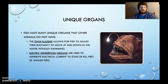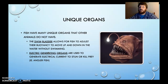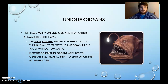Lastly, some unique organs. Fish have many unique organs that other animals do not have. Take a look at the angler fish — it has a unique organ that you can see. It's pretty scary, like something out of a nightmare. The swim bladder allows a fish to adjust its buoyancy, moving up and down without even swimming, through special gas exchange to rise or sink in the water. An electric-generating organ is used to generate electrical current — sometimes to light things, sometimes to stun or kill prey, like with the angler fish.